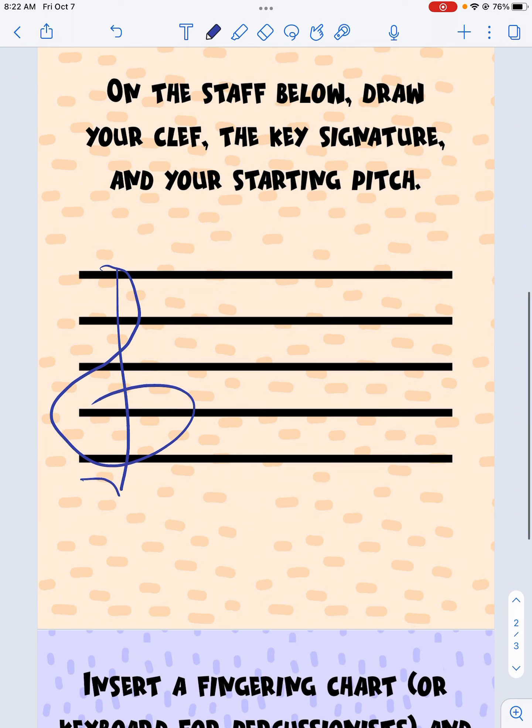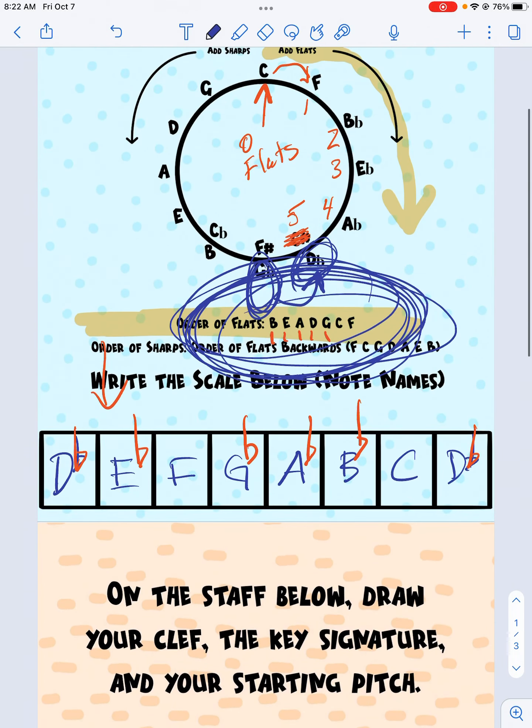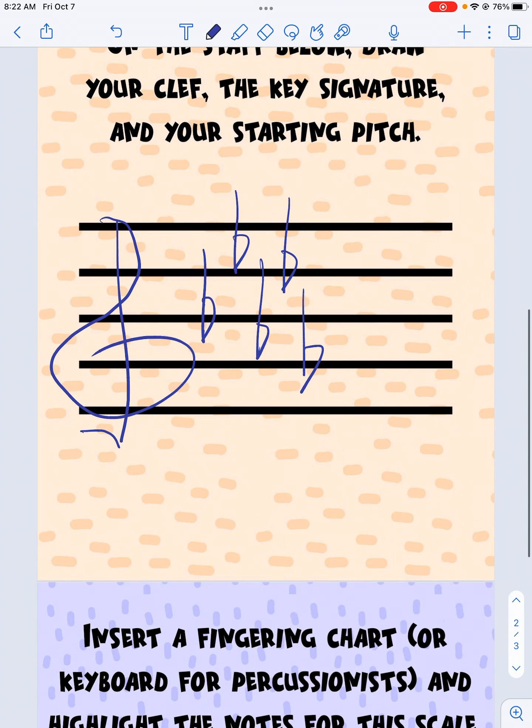It should read in that order of flats. So I go here and go B, then I move over in E, then I move over A, then I move over to D, and the last one was G. Again, I got that from the order of flats on that first page. In order from left to right. Your starting pitch is down here. It's a D flat below the staff.